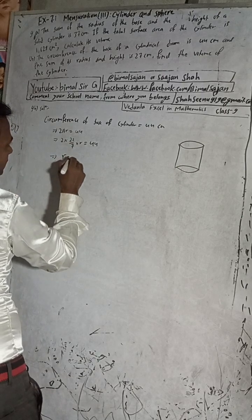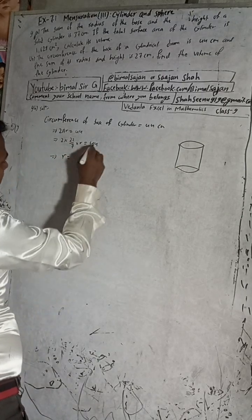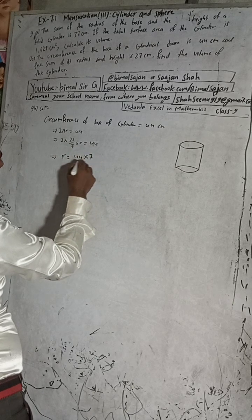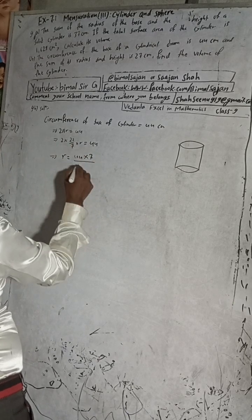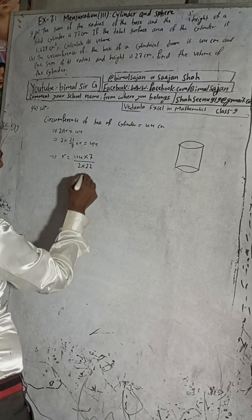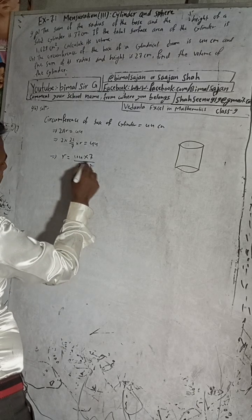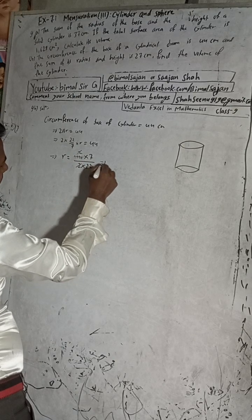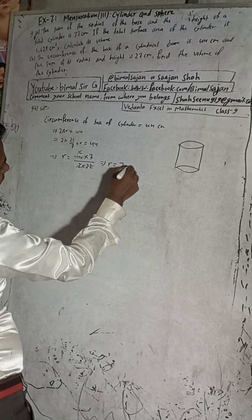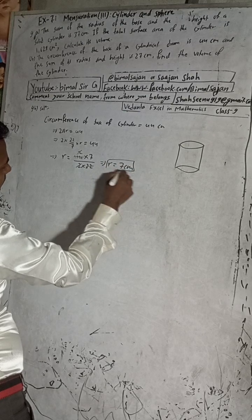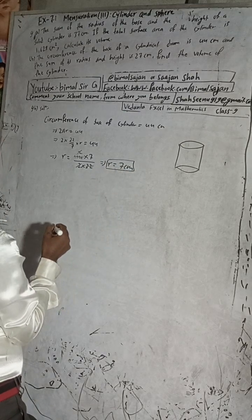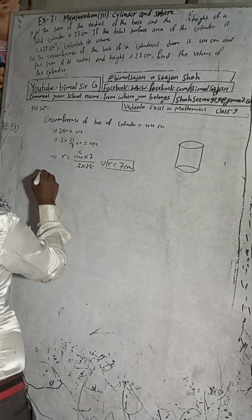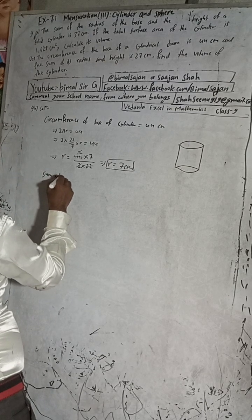Rearranging: r = 44 × 7 divided by (2 × 22). The 22 cancels with 44 to give 2, and 2 cancels with 2. This implies r = 7 cm.